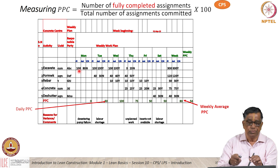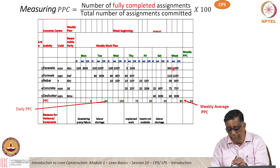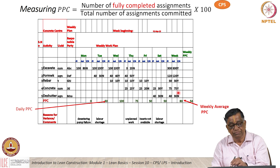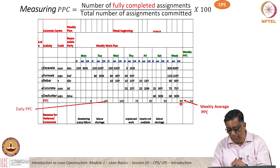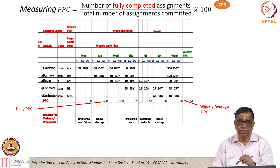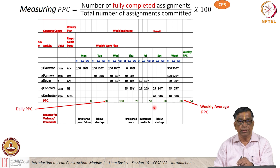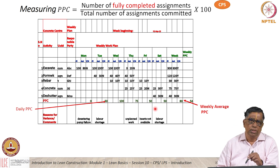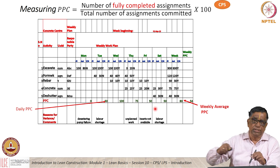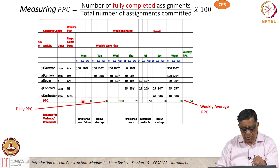Every day we see whether we have met the targets or not — Y means yes, N means no. We count the number of Ys at the end of the week divided by the total number of activities and work out the percentage. For example, here we got 80% as the weekly average PPC. We can also measure PPC every day; these daily PPC numbers give an idea of the variation across the week — am I being consistent, or performing well on one day and not on others?